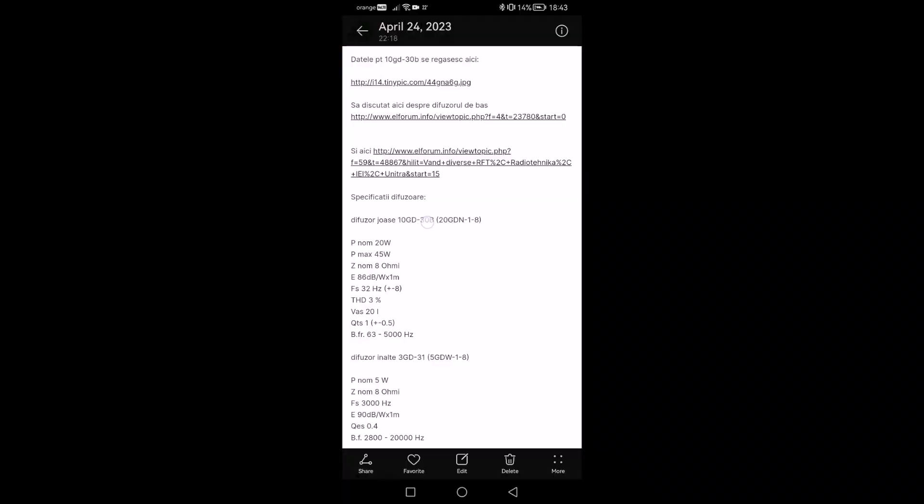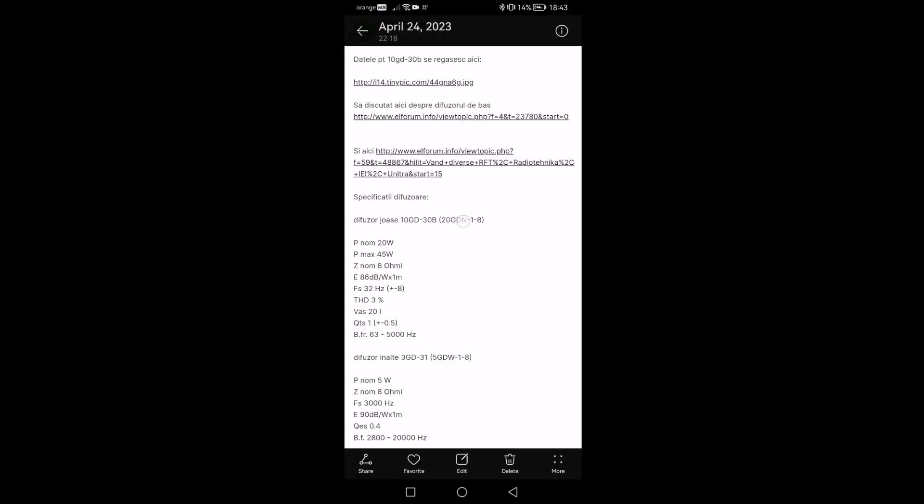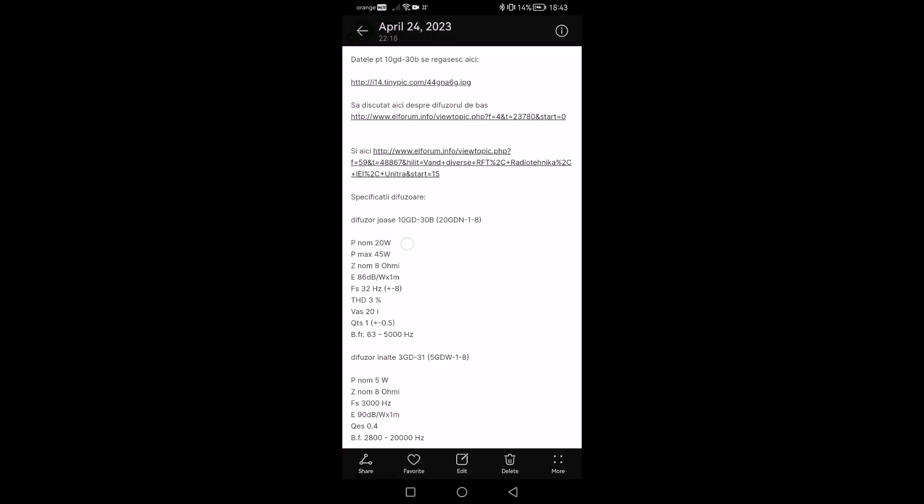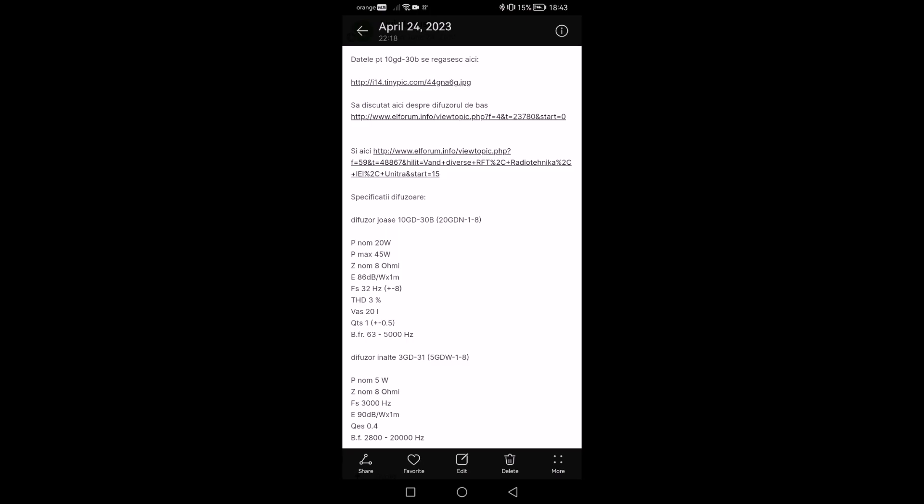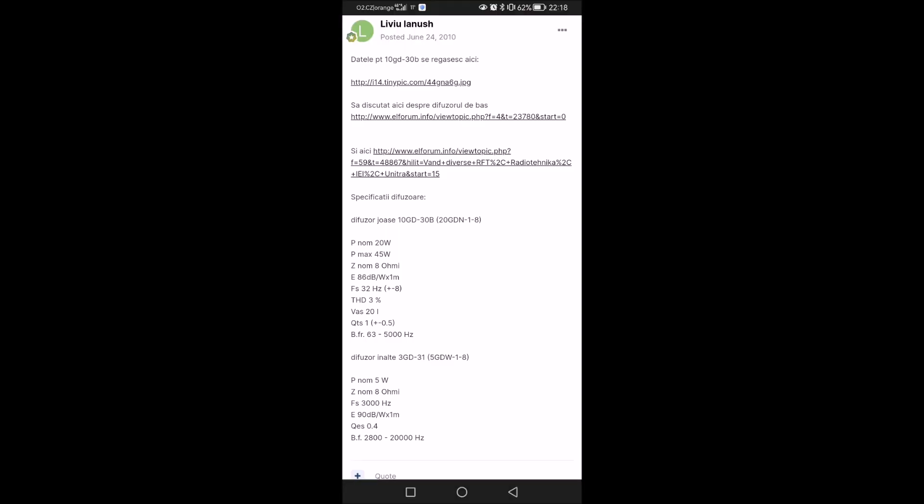These are the info of the speaker. This is the name, 10GD-30B. Similar to this one, they are about the same thing. So in theory, 20 watts, 45 max, 8 ohms. And from 60 to 63 to 5,000 hertz. This one below is another speaker that was equipping a set of stereo speakers, the high frequency. But we are interested in the low frequency. So weirdly enough, this doesn't go extremely low.